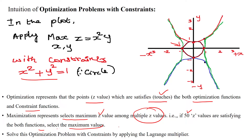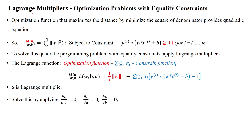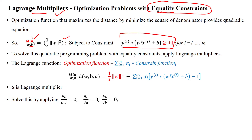This optimization problem with constraints is solved by Lagrangian multipliers. There are equality constraints and inequality constraints. Optimization problems with equality constraints are solved by Lagrangian multipliers. The Lagrangian multiplier function uses a summation from i equal to one to m number of samples, with alpha_i as the Lagrangian multiplier applied to each constraint function.